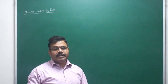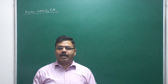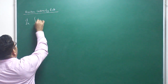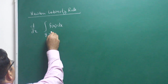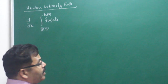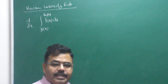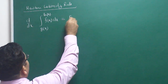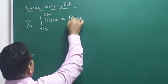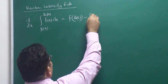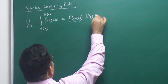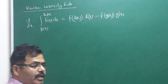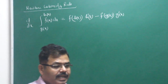Let me introduce this rule. Newton-Leibniz rule is basically used for the derivative of a function which is in the form of integration. For example, if you have to differentiate d/dx of the definite integral from g(x) to h(x) of f(t) dt — this is a definite integration type function. The rule says: put the upper limit in place of t, then multiply by its derivative, minus put the lower limit in place of t, then multiply by the lower limit's derivative.